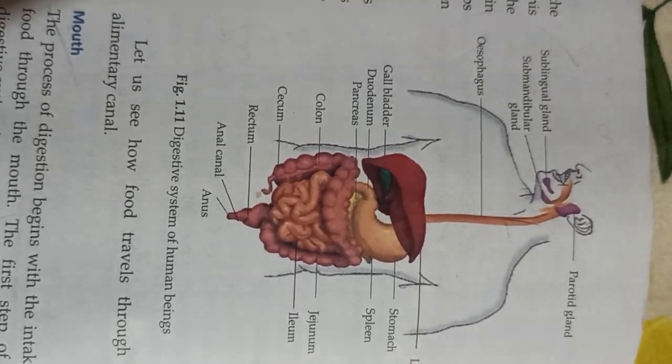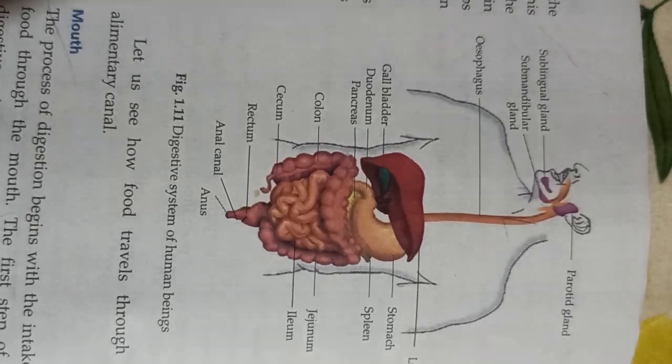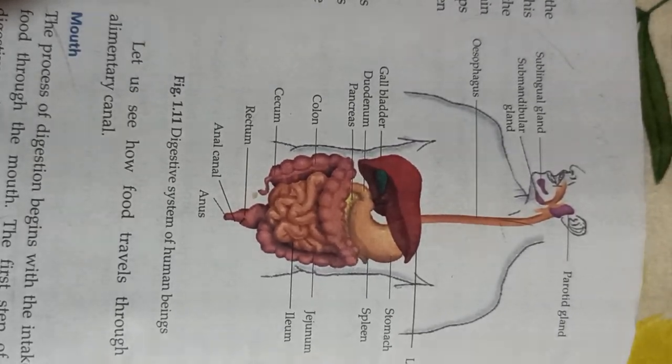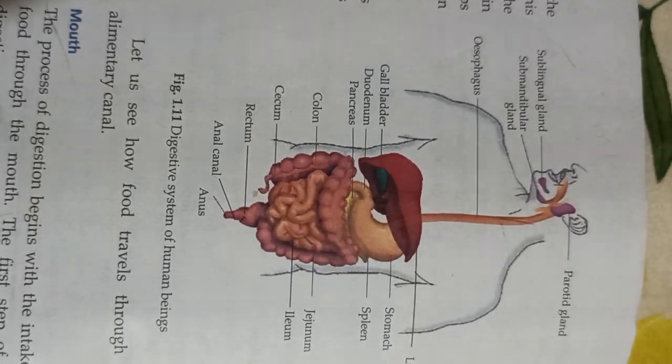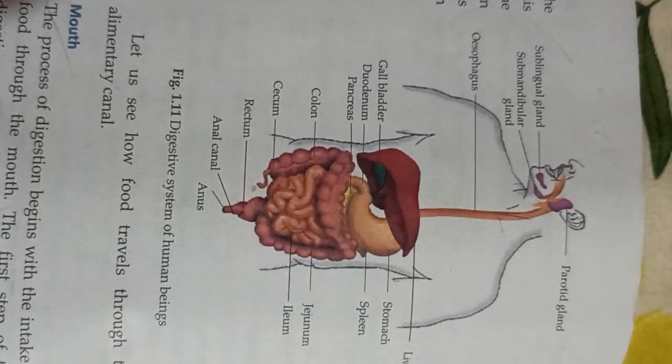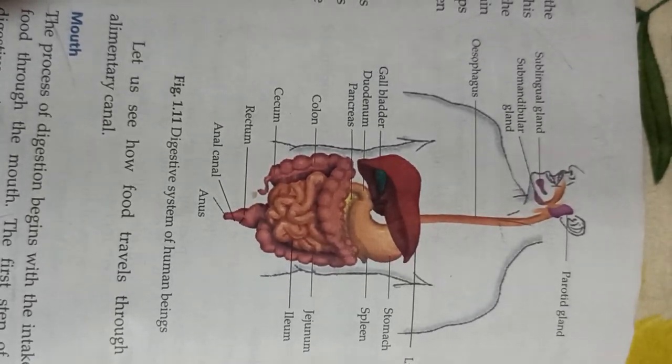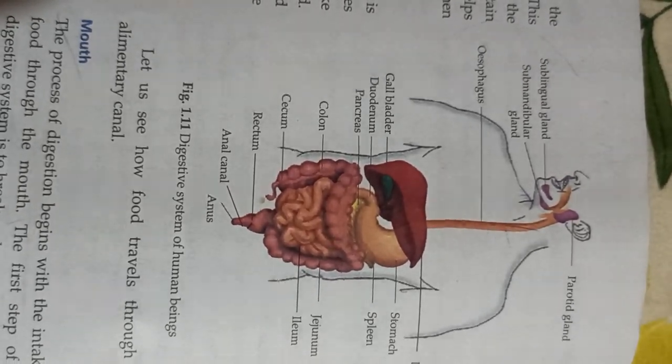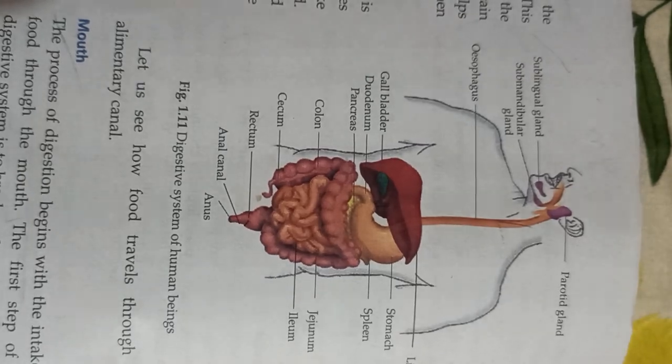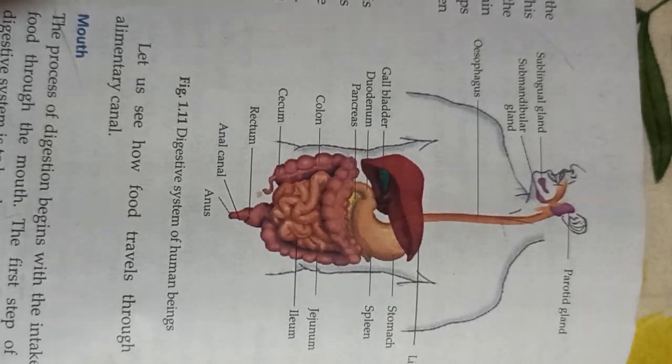As you can see here, parotid gland, sublingual gland, and submandibular gland. One question is asked: from which organ of the digestive system does the digestion of food start? The answer is mouth.